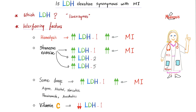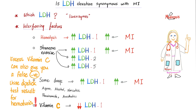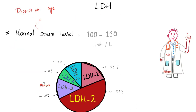Be careful: strenuous exercise can increase LDH1, 2, and 5. Some drugs can elevate LDH. Vitamin C can actually lower LDH1, giving a falsely low result — a patient with MI taking high-dose vitamin C may appear to have a normal LDH1. Also, vitamin C can cause a falsely negative urine dipstick for hematuria — send urine to the lab and order urine microscopy to check for red blood cells.